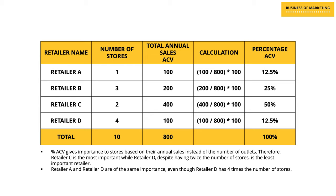Let's understand this with an example. Imagine there are four retailers — A, B, C, and D — with 1, 3, 2, and 4 stores respectively, making a total of 10 stores in the region. Their respective annual sales values (ACV) are 100, 200, 400, and 100, so the total ACV for the region is 800. To find percentage ACV, divide a retailer's ACV by the total regional ACV and multiply by 100. This gives 12.5% for retailer A, 25%, 50%, and 12.5% for the remaining three.